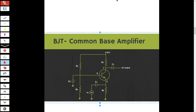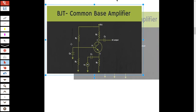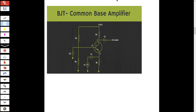For AC analysis, the first thing we do is short-circuit the capacitors. The arrow symbol means ground. We also ground the DC voltage sources. R1 and R2 are both between two ground nodes, so no current passes through them in AC analysis. The base is simply connected to ground.